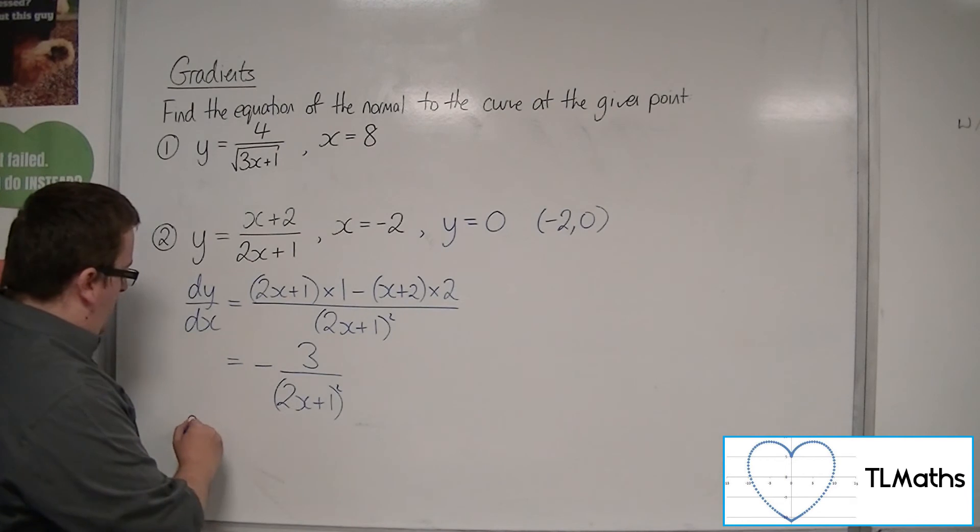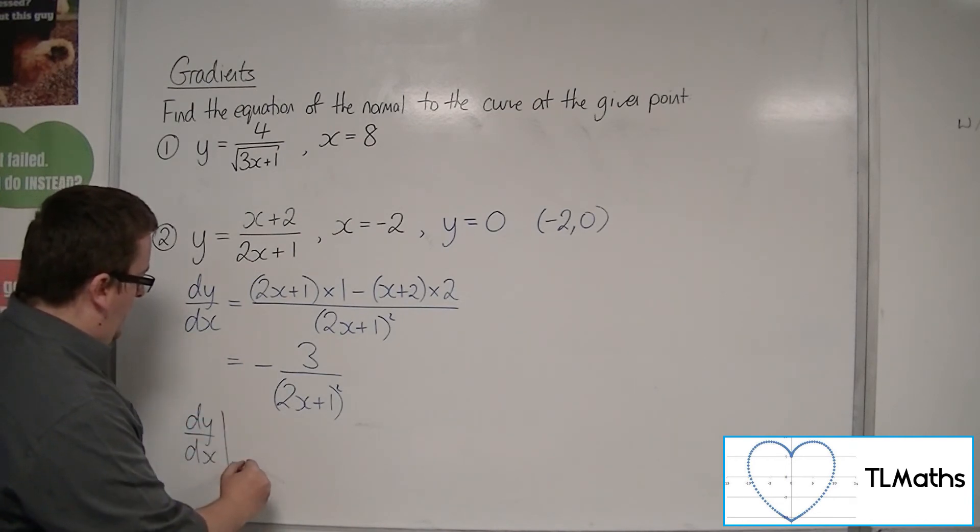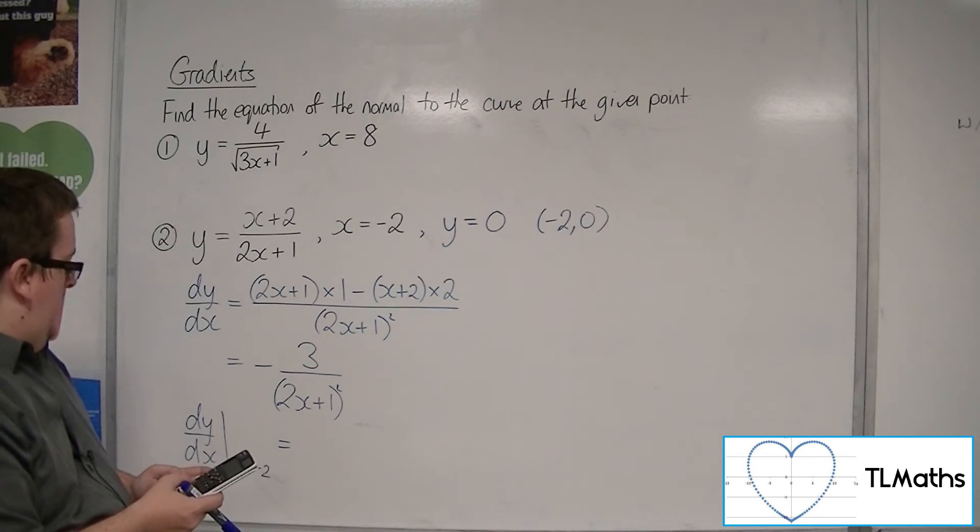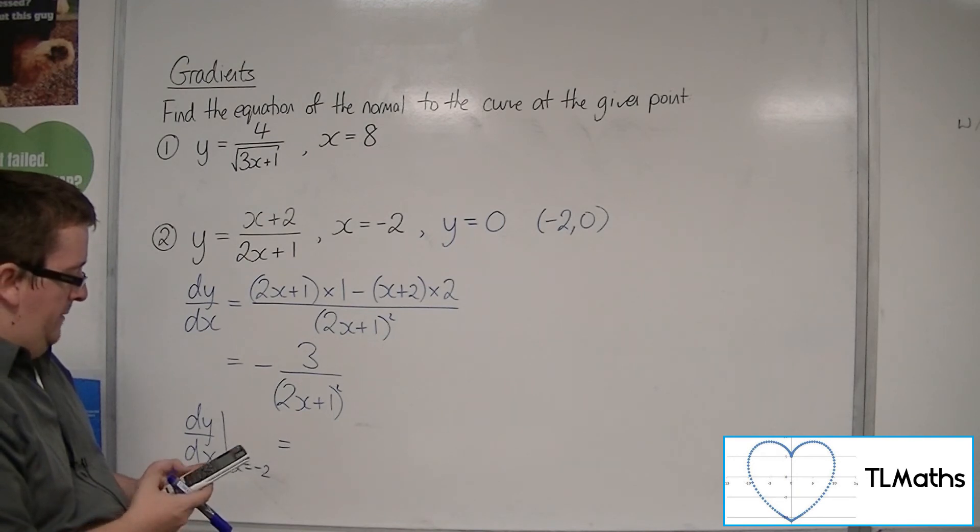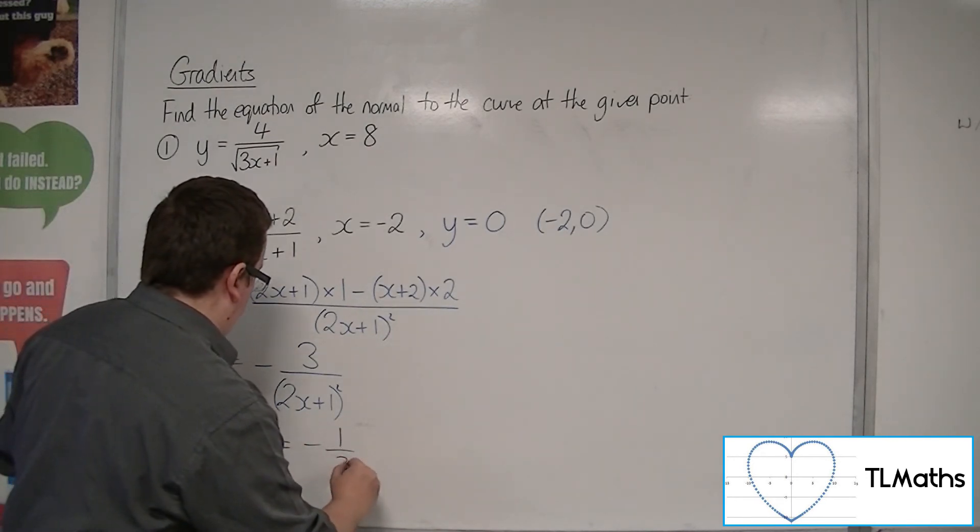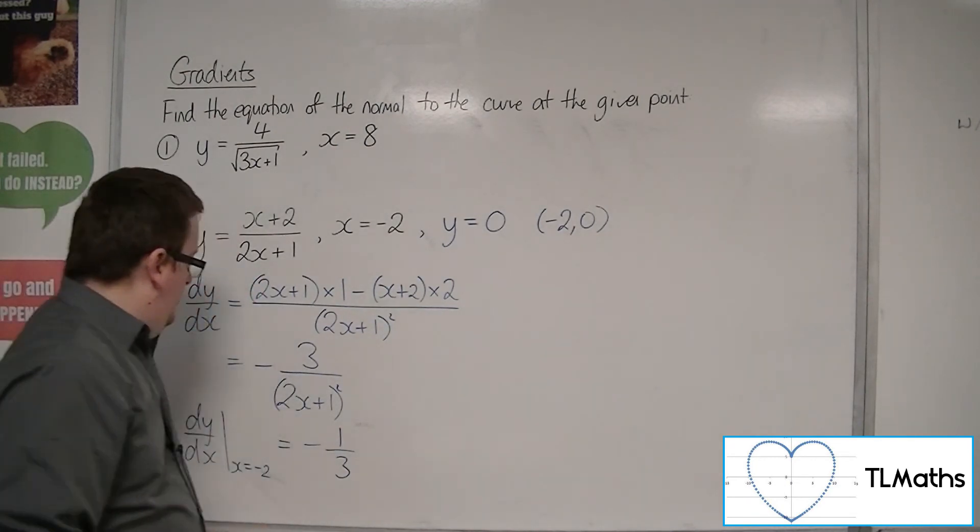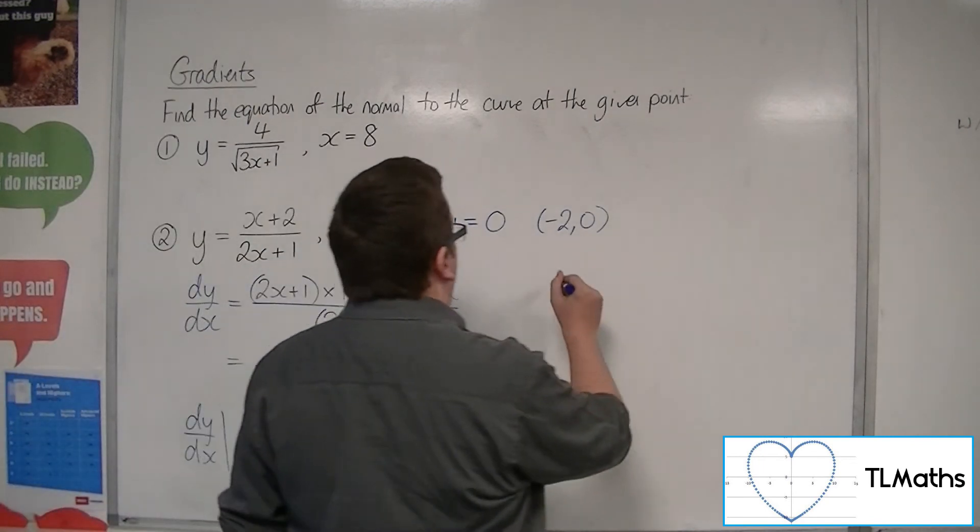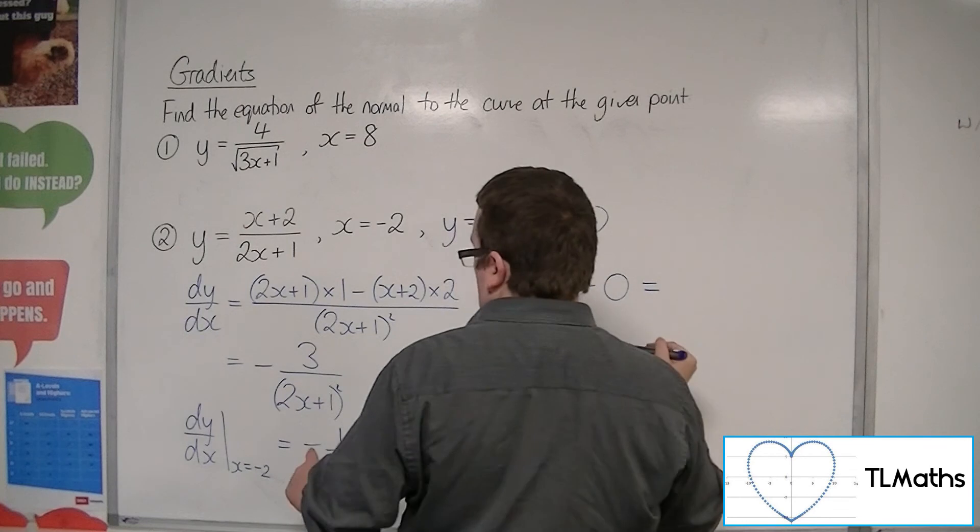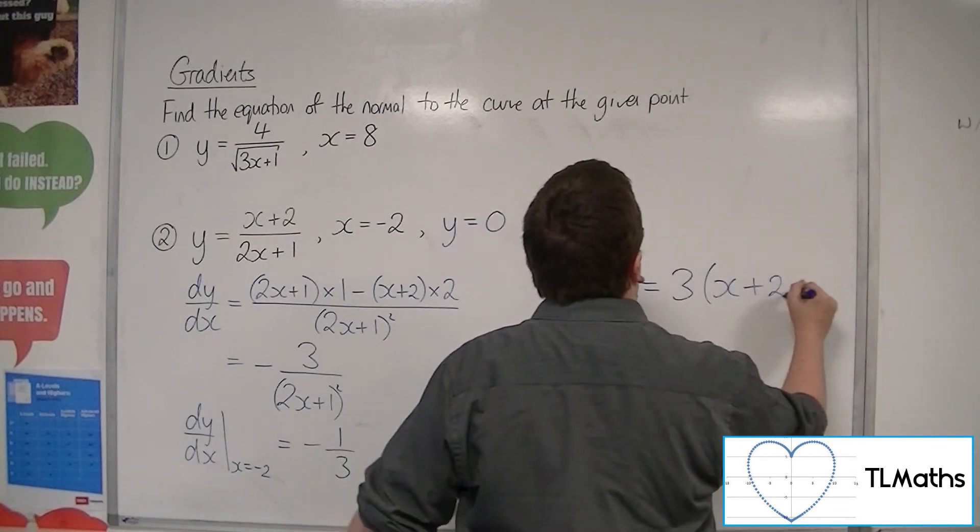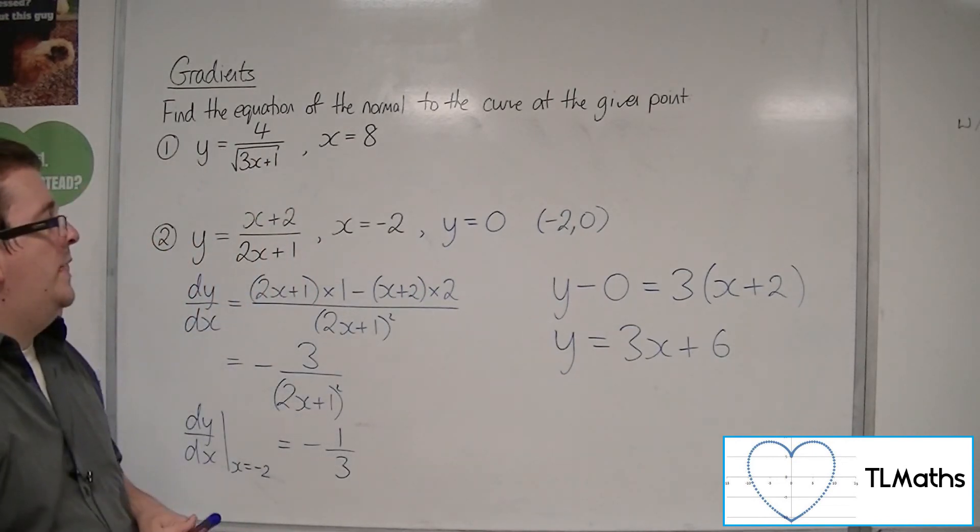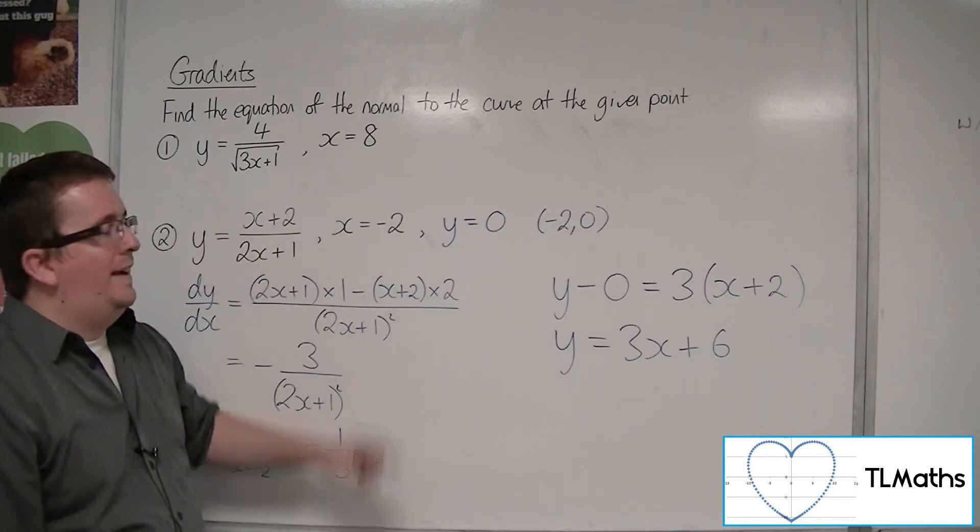So I want to evaluate the gradient function at x is equal to minus 2. So minus 3 over 2 lots of minus 2 plus 1 squared, and we get minus 1/3. So if that's the gradient of the tangent to the curve, I want the gradient of the normal, so that would be 3. So y minus y₁ is equal to the negative reciprocal of that, so 3 lots of (x + 2). So y equals 3x plus 6. That's a nice answer. So that's the equation of the normal to that curve at x equals minus 2.